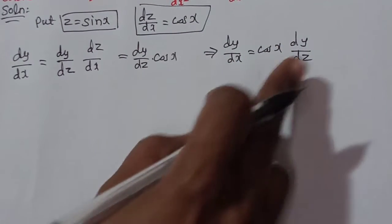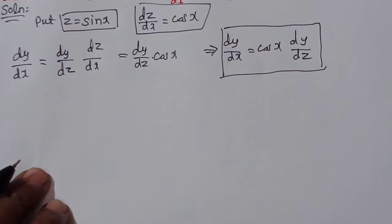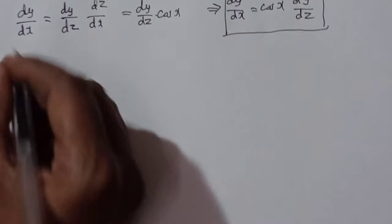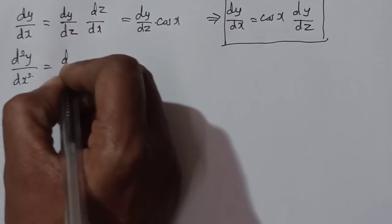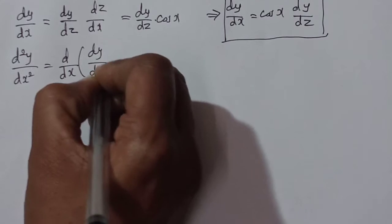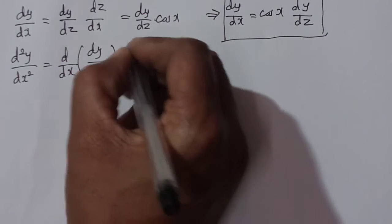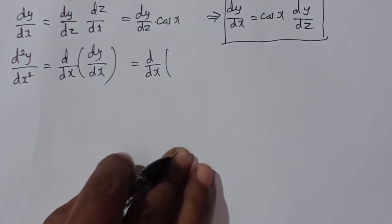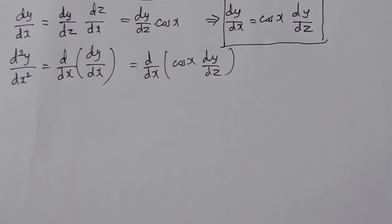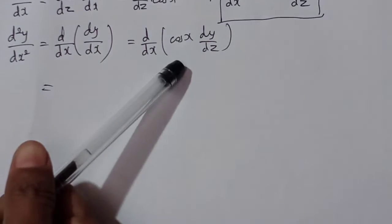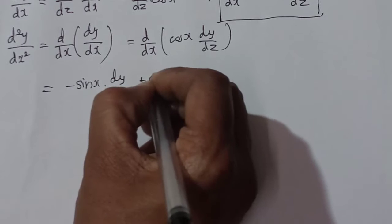So dy/dx with x as independent variable becomes cos x · dy/dz with z as independent variable. This is the change of variable. Now for d²y/dx², we differentiate dy/dx = cos x · dy/dz again with respect to x, applying the product rule (uv rule): differentiate cos x to get −sin x · dy/dz, plus cos x · d/dx(dy/dz).